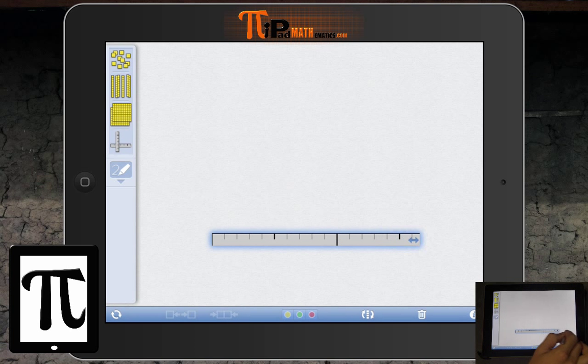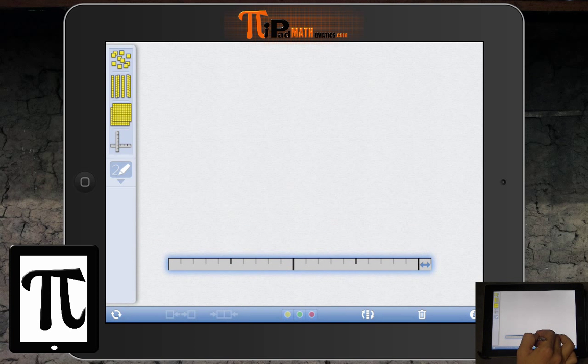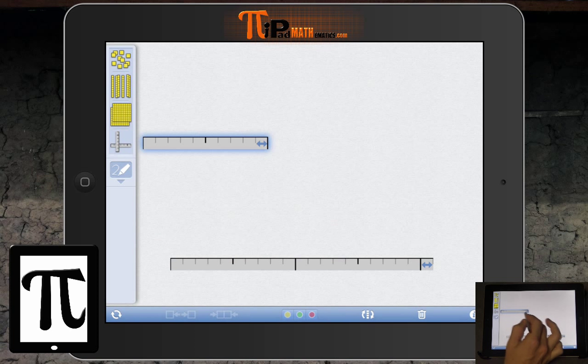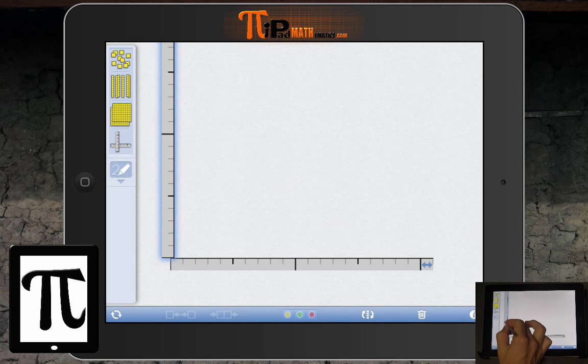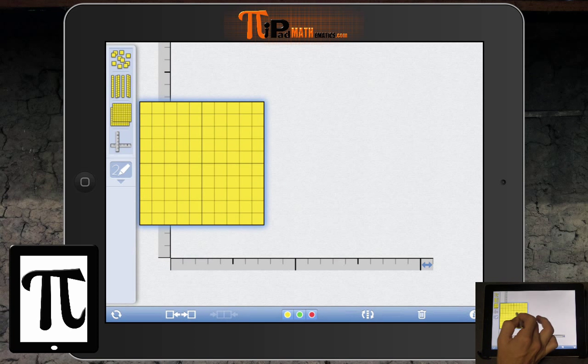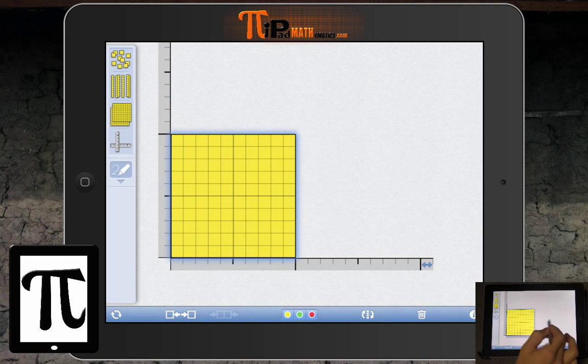You also have these measurement tools where you can set up a ruler as horizontal and as vertical. It comes out as horizontal automatically, and then there's a button at the bottom that allows you to flip it vertically. From that you can click it together and create a nice little ruler system that will allow you when you add a flat to click it in the corner and see that it is ten by ten.